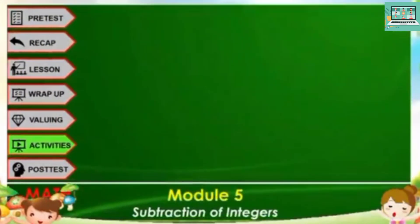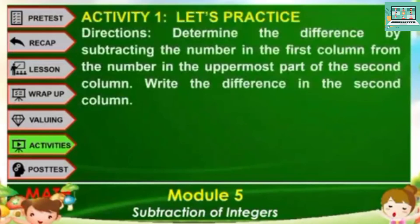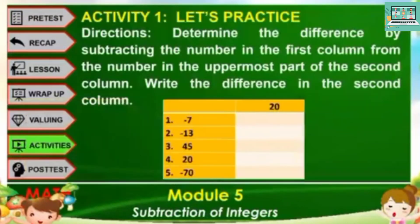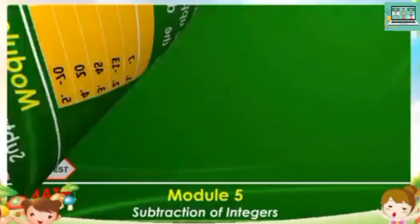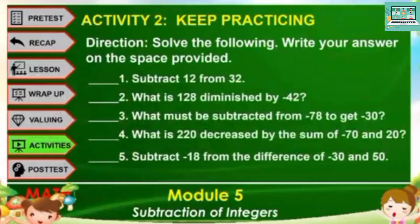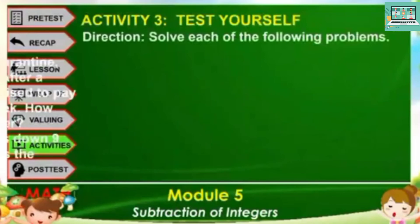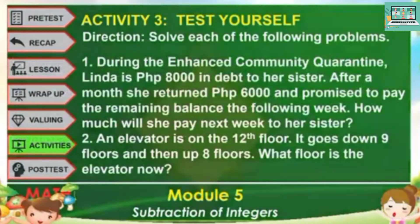For your activities, kindly refer to your module. For activity 1 (Practice): determine the difference by subtracting the number in the first column from the number in the uppermost part of the second column, and write the difference in the second column. For activity 2 (Keep Practicing): solve the following and write your answer on the space provided. For activity 3 (Test Yourself): solve each of the following problems.